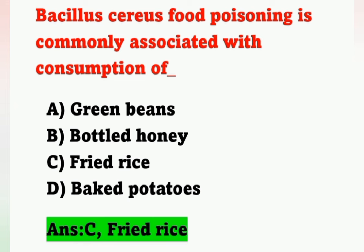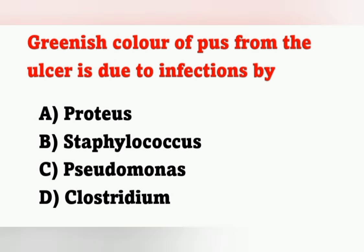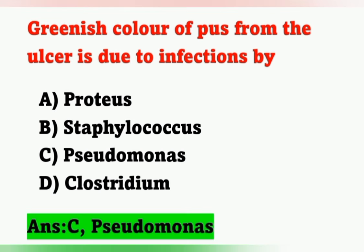The next question: greenish color of pus from an ulcer is due to infection by which organism? Options: Option A, Proteus; Option B, Staphylococcus; Option C, Pseudomonas; Option D, Clostridium. Greenish color of infected pus from the ulcer is due to Pseudomonas infection. Option C is the correct answer.